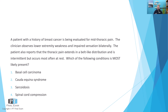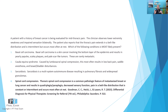This question is obviously asking about differential diagnosis. You have a patient with a history of breast cancer and a current complaint of mid thoracic pain. In addition to that, lower extremity weakness and impaired sensation bilaterally. Anytime you see bilateral presentation of either weakness or sensory disturbances, that should be a huge red flag. The real kicker here is that the pain, although in a belt-like distribution — almost like a dermatomal band — is intermittent but occurs most often at rest. Pain at rest, especially night pain, combined with all these bilateral symptoms, tells you there's probably something quite serious going on. When you consider that with breast cancer, one of the most likely sites for metastasis is the thoracic spine, that leads you quite nicely to the idea of spinal cord compression.